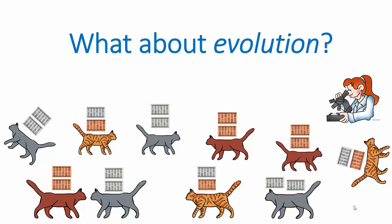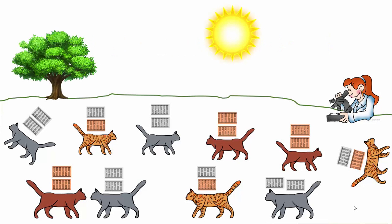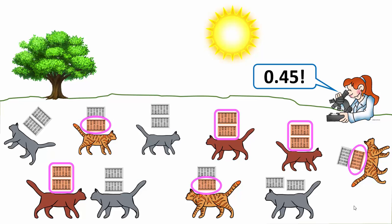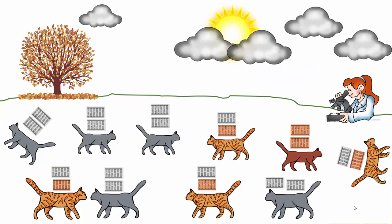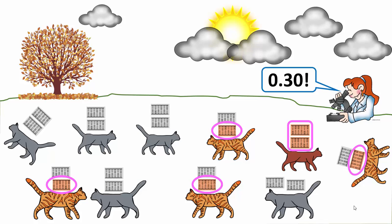But we still haven't gotten to the question about evolution. One way we could measure it is to go out to a population in the field, sample a bunch of them, and count up their alleles. We find that the frequency is 0.45 brown. Then we come back much later in time, count again, and see if the allele frequency has changed. If we find that it has — say, it went down from 0.45 to 0.30 — then we can say yes, evolution happened. And that is actually a great way to do it.